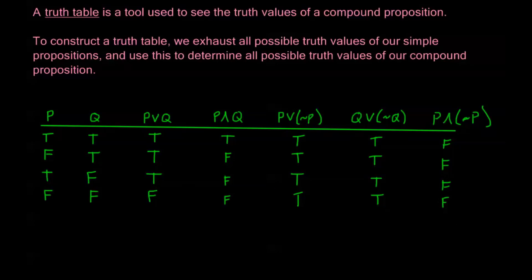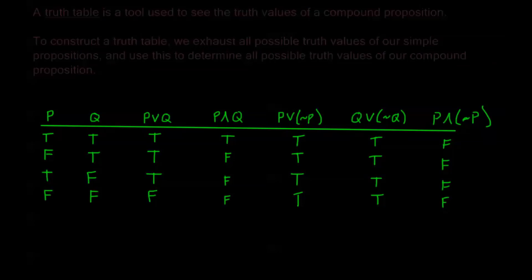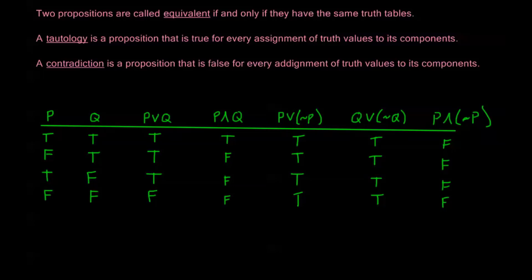The reason I had these last three examples is I want to go over a couple of basic definitions. We call two propositions equivalent if and only if they have the same truth tables. That means they're called equivalent if they have the same truth tables, and if they have the same truth tables, they're called equivalent. This statement goes in two directions. We can see here that P or not P is equivalent to Q or not Q.